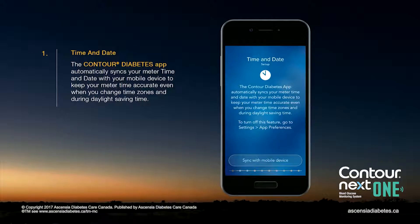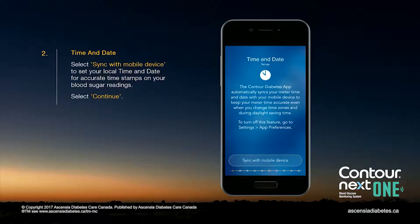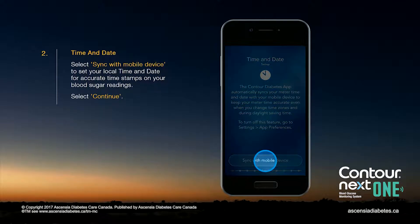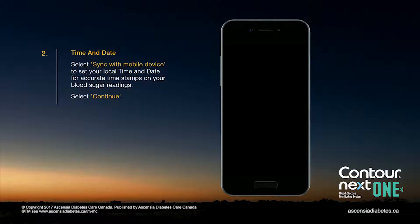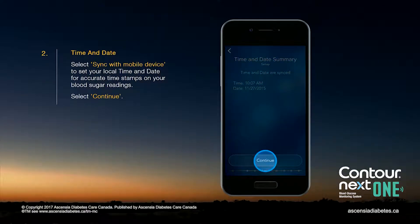The Contour Diabetes app automatically syncs your meter time and date with your mobile device to keep your meter time accurate. Select Sync with Mobile Device to set your local time and date for accurate timestamps on your blood sugar readings. Then select Continue.